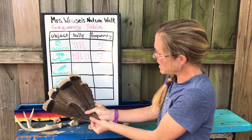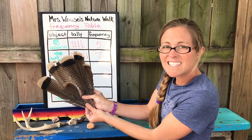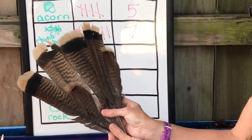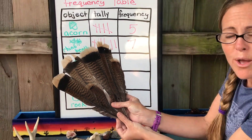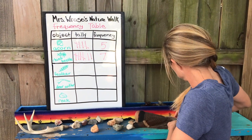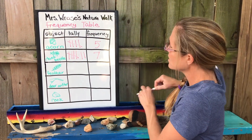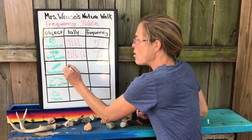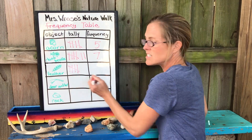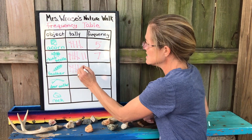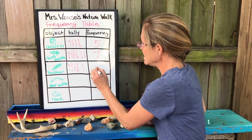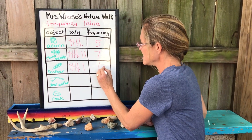Onto our feather count — we have six feathers in all, so let's show six on our chart. One, two, three, four — five is our slash again — six, and our frequency is six.